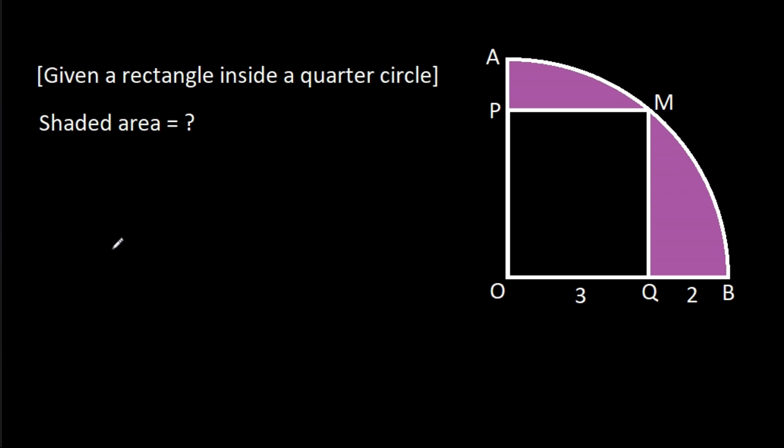The radius of the quarter circle will be equal to OB, and OB is OQ plus BQ. OQ is 3 plus BQ is 2, which equals 5.